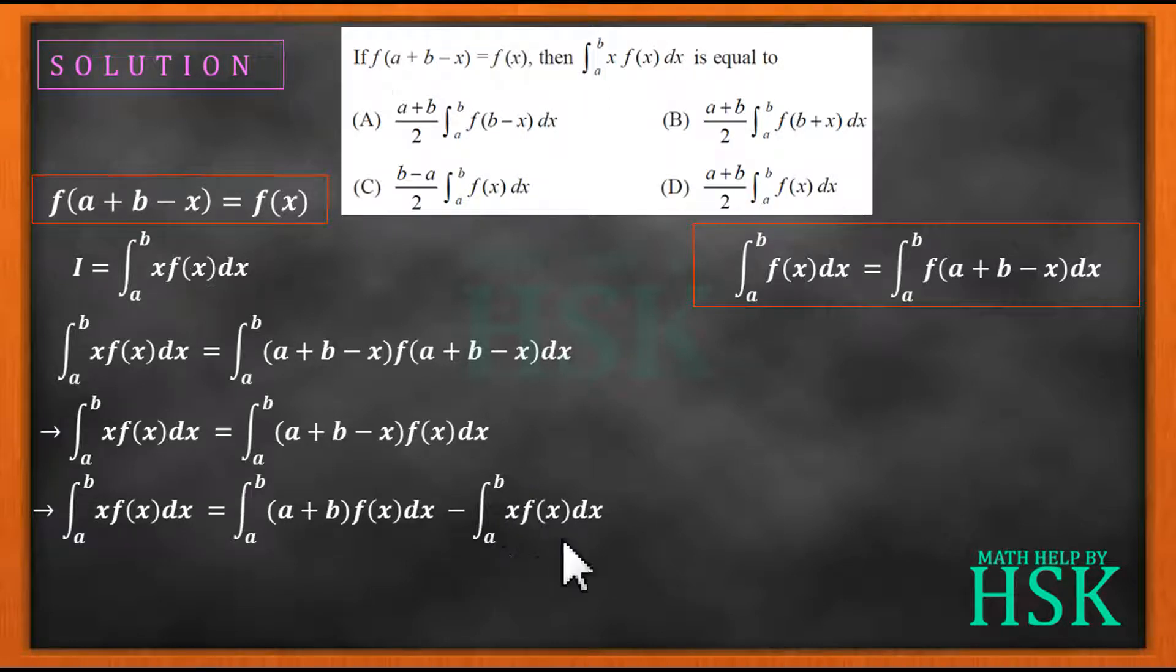Now this value can be written as equal to i, and because this value and this value is equal, so this can be also written as equal to i. For the sake of simplicity, I write i is equal to (a+b)∫f(x)dx from the limit a to b minus i.